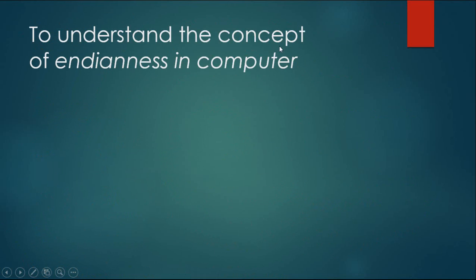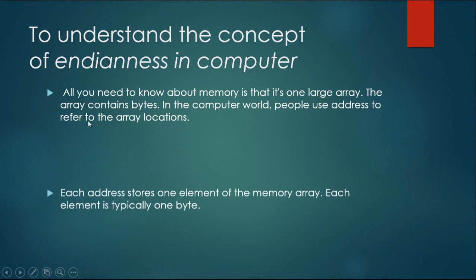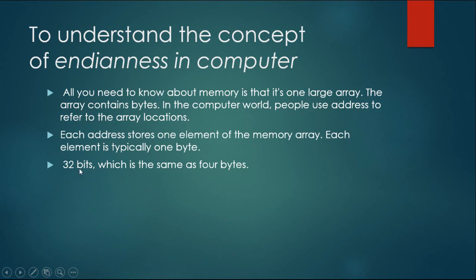To understand the concept of Indianness in computing, all you need to know about memory is that it's one large array. The array contains bytes. In the computer world, people use addresses to refer to the array locations. Each address stores one element of the memory array. Each element is typically one byte — 32 bits is the same as four bytes.